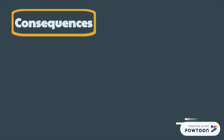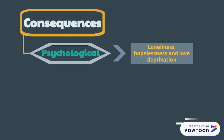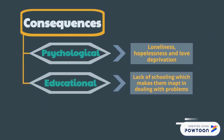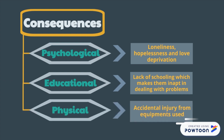Some of the consequences of child labor are: psychological, due to loneliness, hopelessness, and love deprivation; educational, due to lack of schooling which makes them inept in dealing with problems; and physical, due to accidental injuries from equipment use.